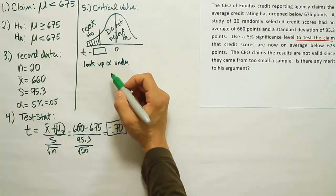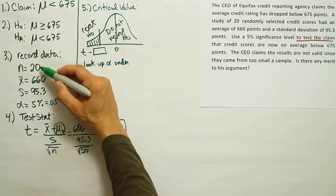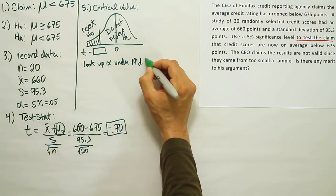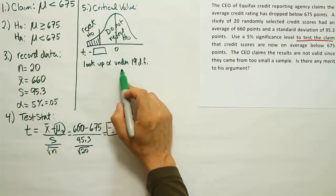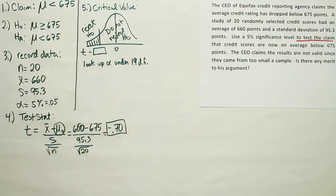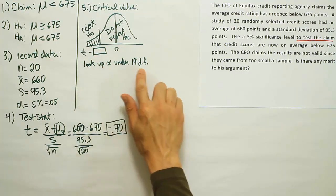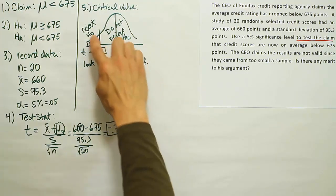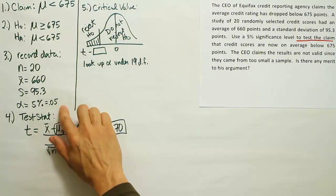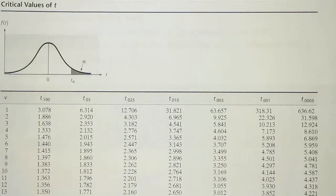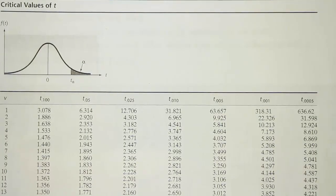This number here is the number we're looking for when we talk about the critical value. We want to know, where does this rejection region begin? In order to determine that, we're going to go to our t-table, and we're going to look up our critical t-value. Since it's a one-tail test, we look up alpha, and since it's a t-test, we have 20 take away 1, which gives us 19 degrees of freedom. So look up alpha under 19 degrees of freedom.